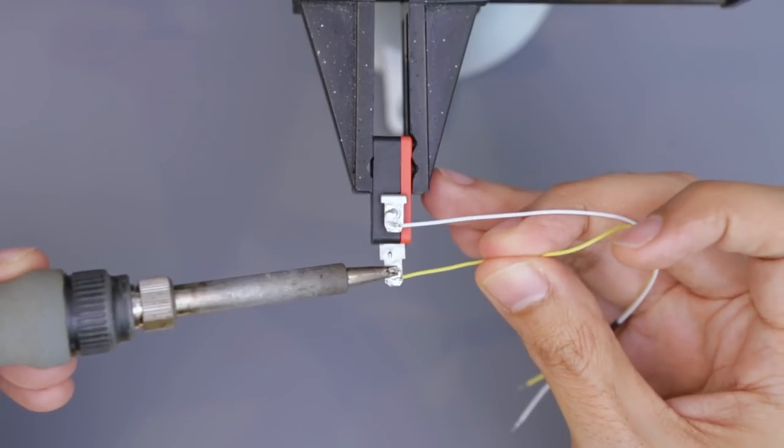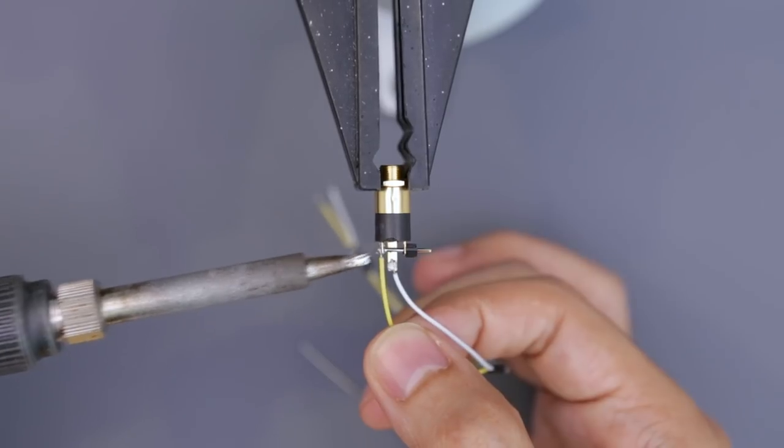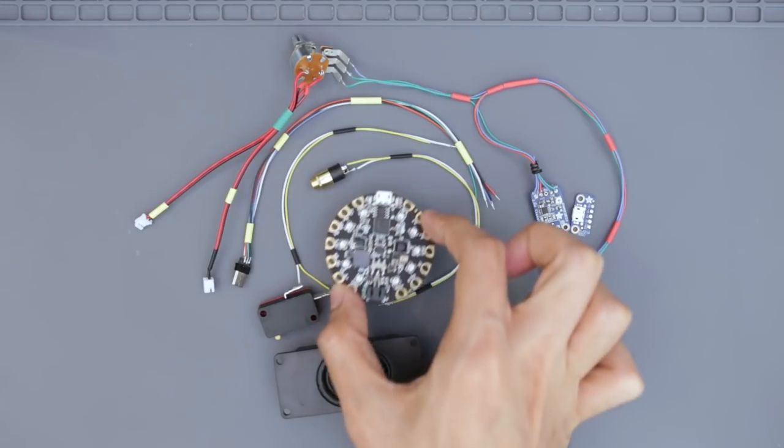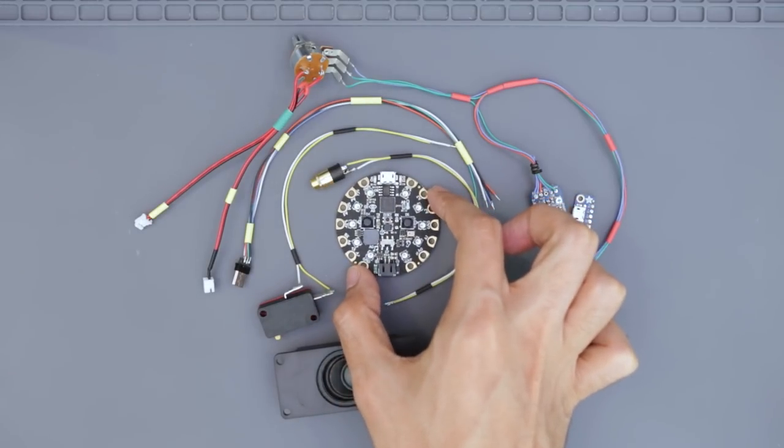Then, I wired up the micro-switch and TRS jack for triggering the audio. And with all the components wired up, we can work on hooking them up to the Circuit Playground Express.